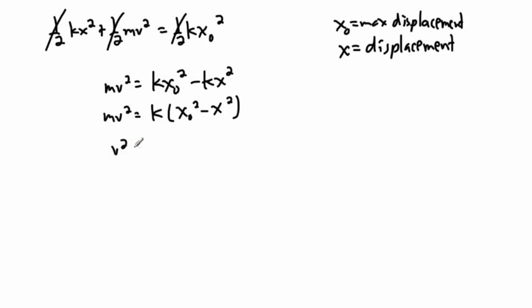So how am I going to do that? Well, I guess I've got to get v on its own. So v squared at least. I've got to divide both sides by m. So I have v squared equals k over m times x zero squared minus x squared.